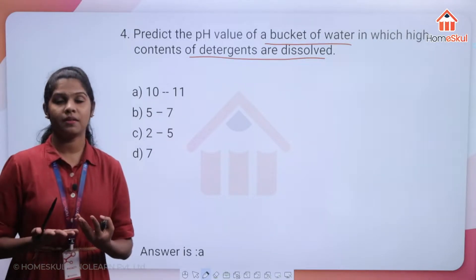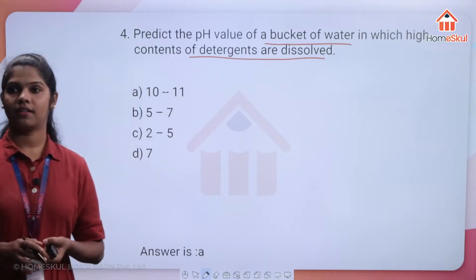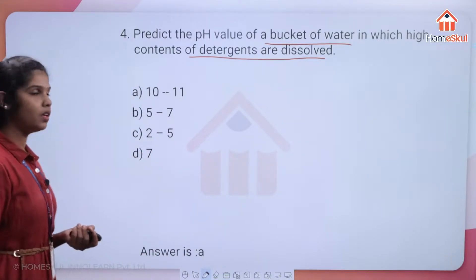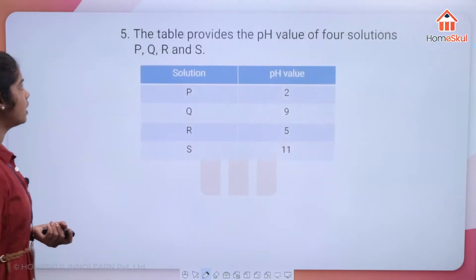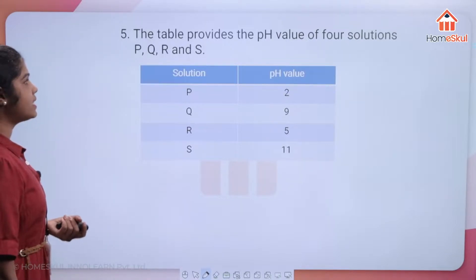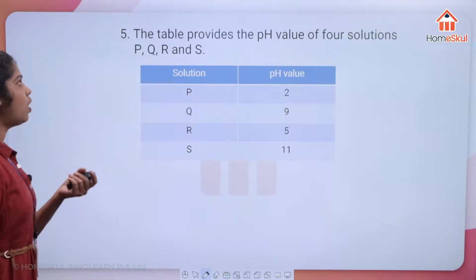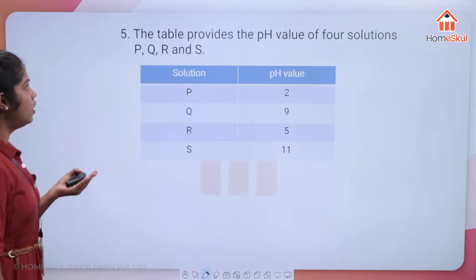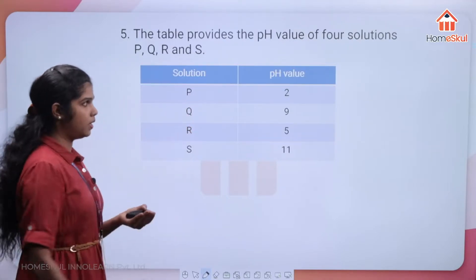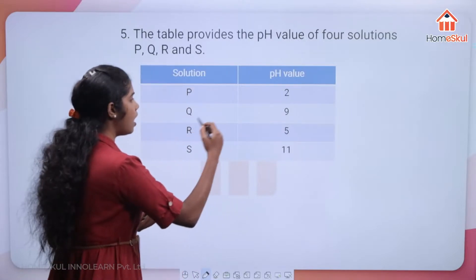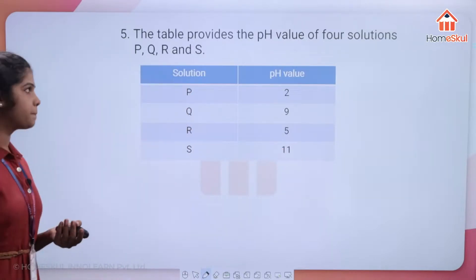If the pH value is 7, the solution is neutral. Moving to the next question: a table provides the pH values of four solutions P, Q, R, and S. P is 2, Q is 9, R is 5, and S is 11.